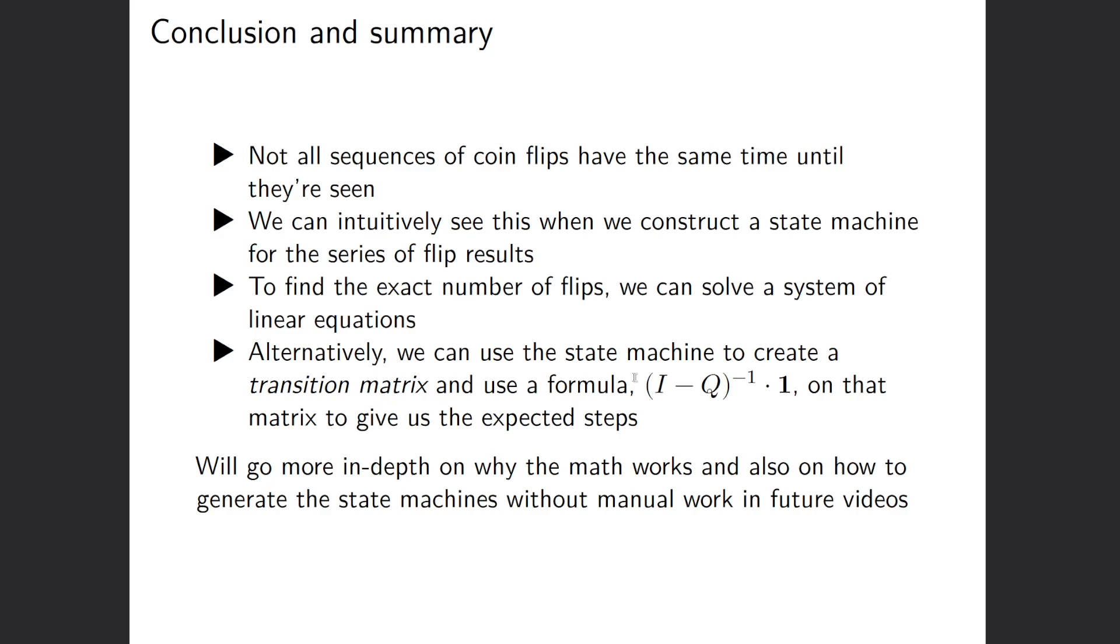And so in summary, let's go over the main points again. Not all the sequences of coin flips have the same time until they're seen. So we saw HT and TT did not have the same expected number of steps before we saw them. Secondly, we can intuitively see this when we construct a state machine for the series of flip results. So remember our state machines for HT and TT, we were able to look at that and say, yes, it makes sense that TT takes longer for us to see because we can lose our progress more easily. We go back to the start state if we don't see two Ts in a row.